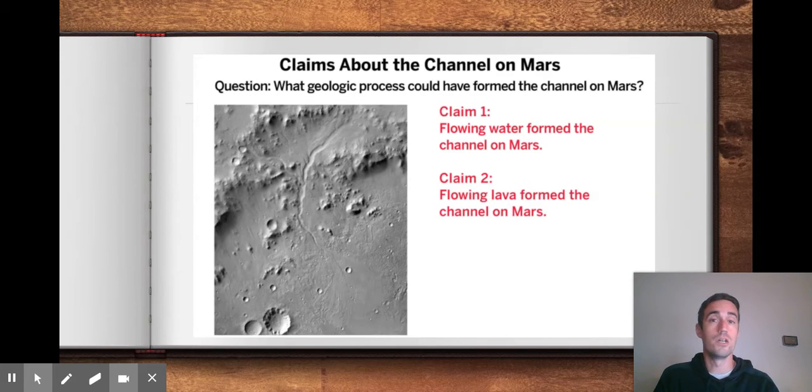You may also at this point be unsure about which claim you think is true. If that's the case, tell me why. What piece of evidence makes you think it could be formed by water? What piece of evidence makes you think it could be formed by lava? And that would be enough to tell me why you're unsure. If you think one of these claims is true, tell me what piece of evidence you think is strongest in supporting your claim.